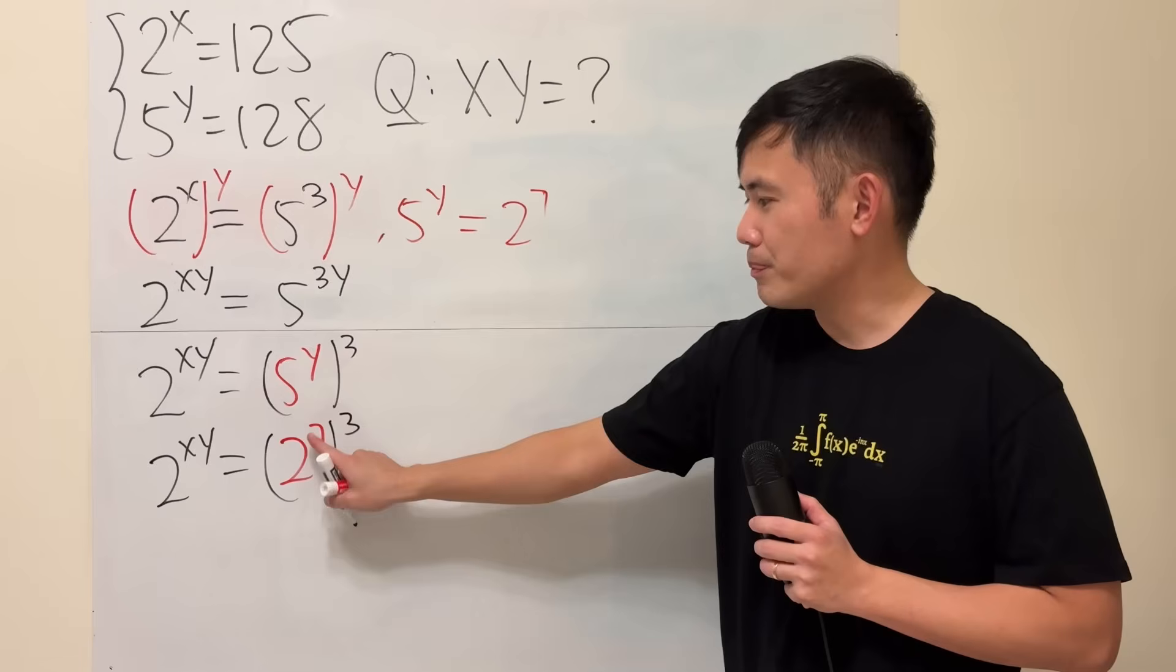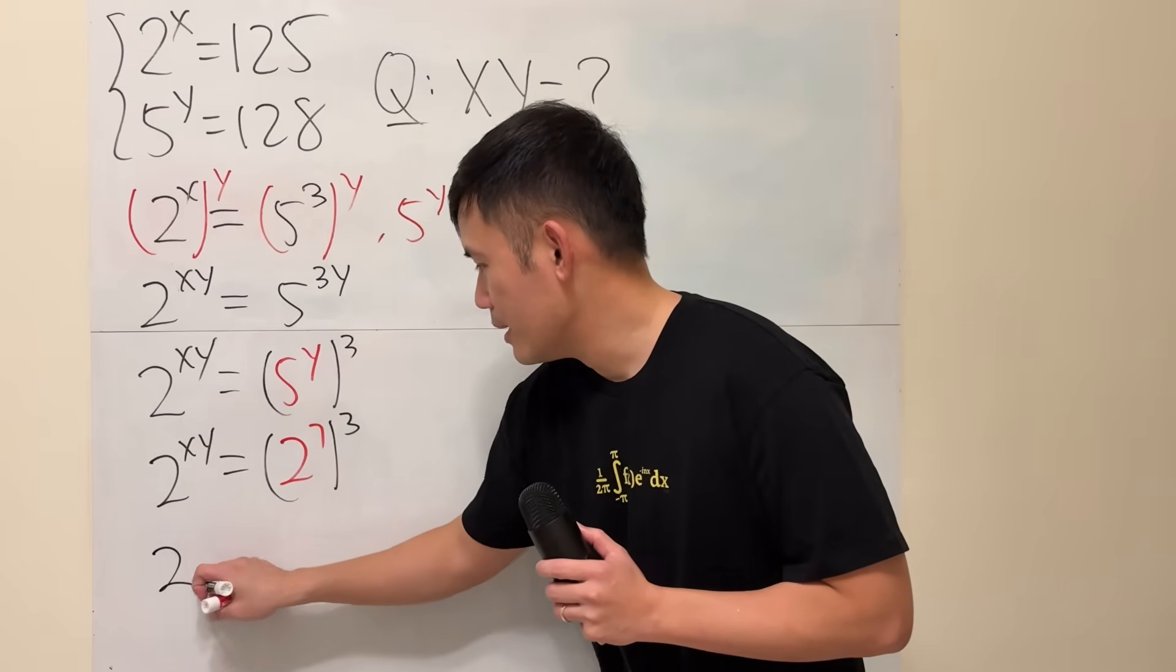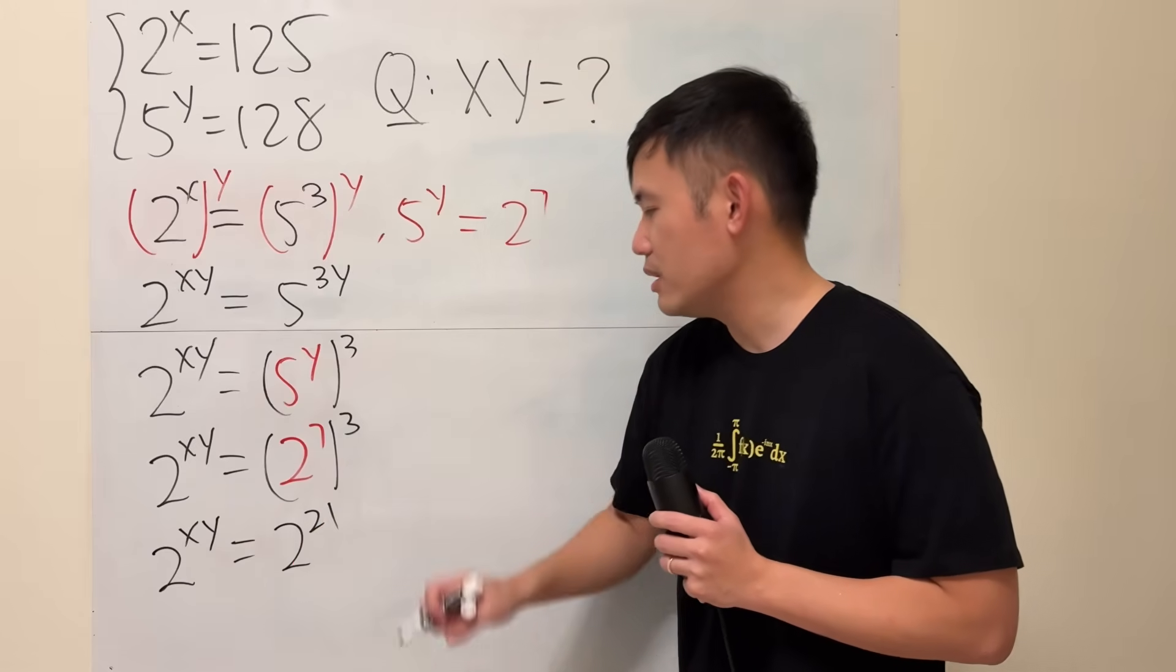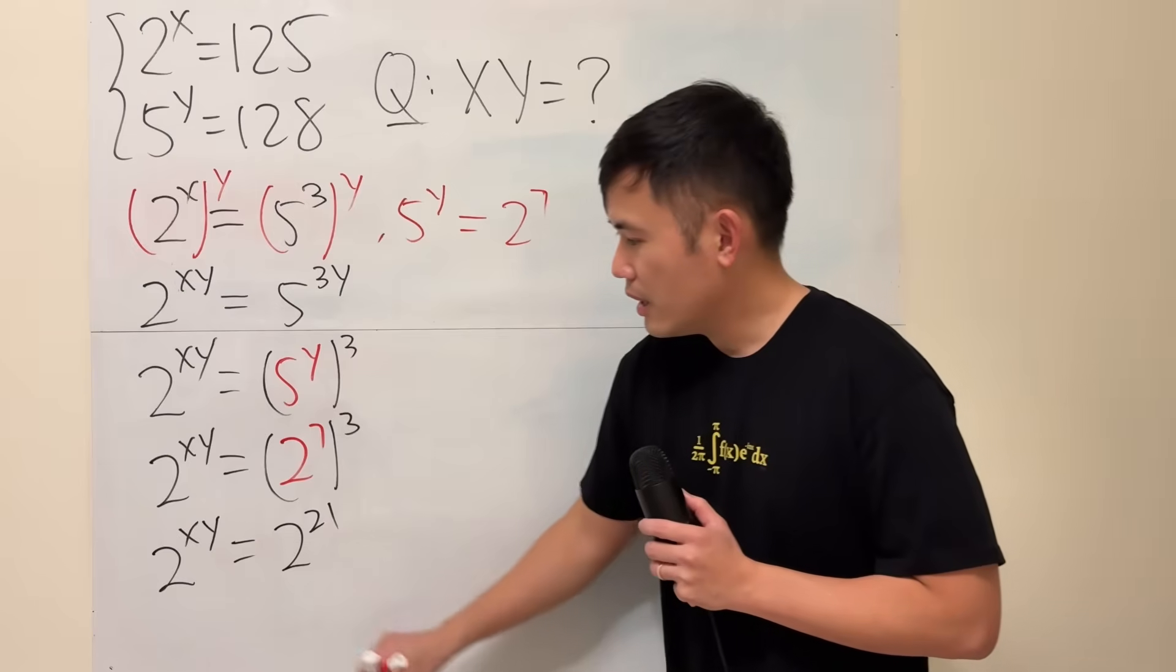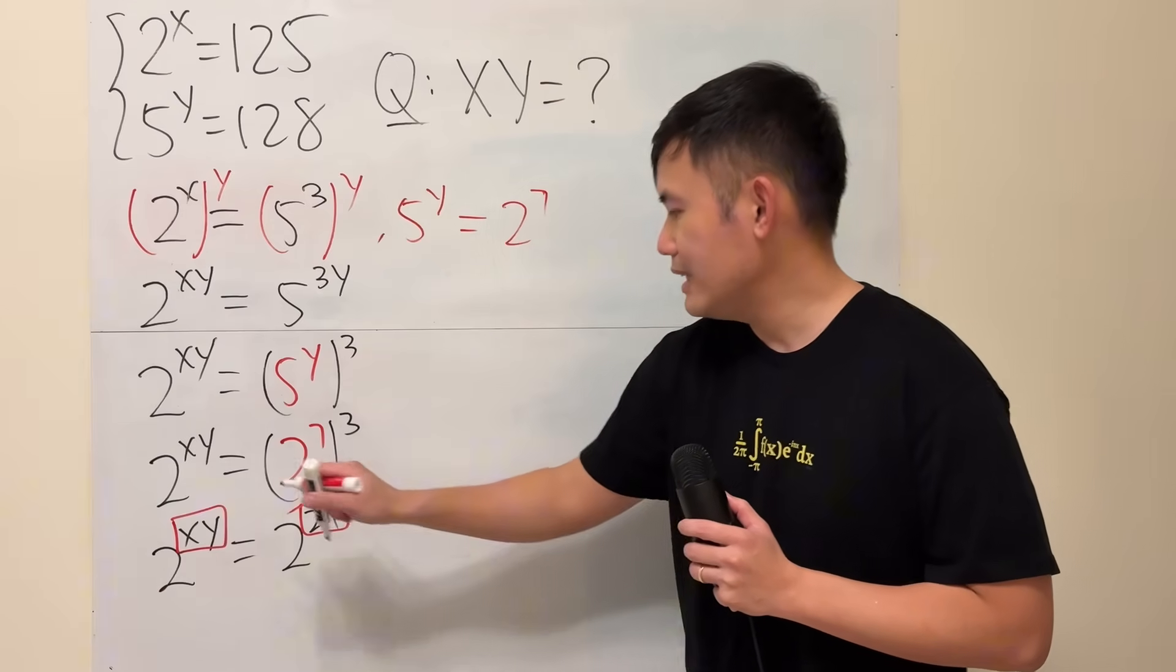Once again, we have a power to a power. We can multiply the exponents. This is just going to be 21. So 2 to the xy being the same as 2 to the 21 power. Now, they have the same base, so that means the exponents must be equal.